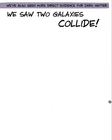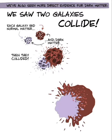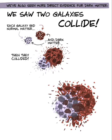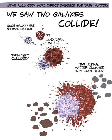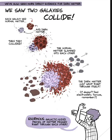We've also seen more direct evidence for dark matter. We saw two galaxies collide, actually the result of their collision. And you can see these galaxies each had normal matter and dark matter, and then they collided, the normal matter slammed into each other, the dark matter just went through itself. These enormous galactic sized pieces of matter passed through each other.